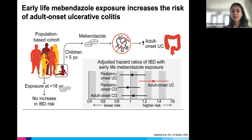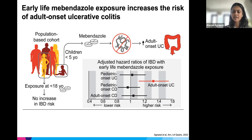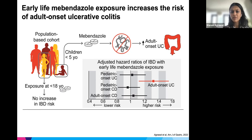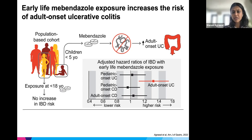We also studied the role of mebendazole — a broad-spectrum anti-helminthic agent — and the risk of IBD, categorizing exposure as early life (under age five years) versus later in childhood. The hypothesis is that parasitic infestations promote immune tolerance, and eradication with mebendazole during the early life period may lead to loss of immune tolerance, making an individual susceptible to IBD later. We found that early life mebendazole exposure increased the risk of adult-onset ulcerative colitis by approximately 30%, and again this was specific only to UC and not Crohn's disease, consistent with our findings on prenatal antibiotics.